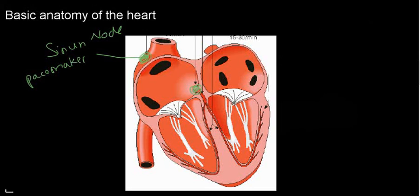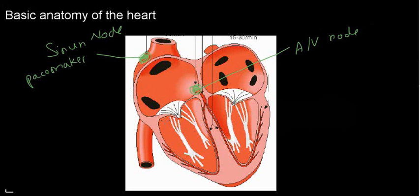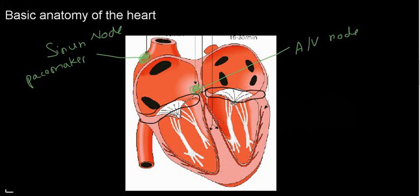Right here we have the AV node, which basically takes the electrical excitability and moves it from the atria to the ventricles. Why can't the action potential just go directly from the atria to the ventricles? There's some sort of fibrous tissue that doesn't conduct action potential very well, so the action potential has to go through the AV node — and it's really well designed to do that.